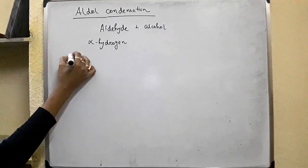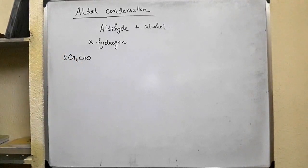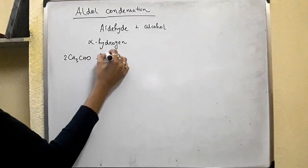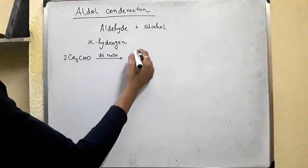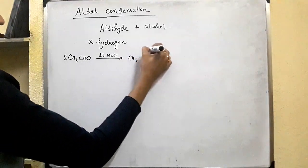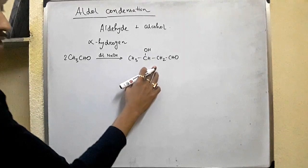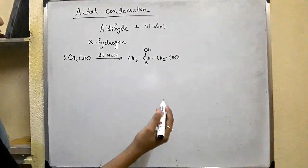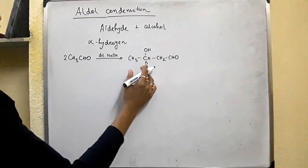For example, this is acetaldehyde. Two molecules of acetaldehyde in the presence of a dilute base such as NaOH undergo self-condensation to form a beta-hydroxy aldehyde. This is the product of aldol condensation. This is the beta-carbon and the OH group is attached to this beta-carbon — so, beta-hydroxy aldehyde. The IUPAC name is 3-hydroxybutanal.